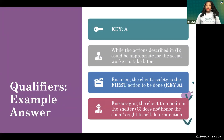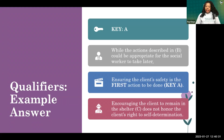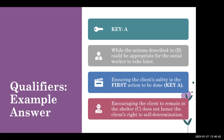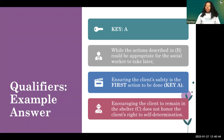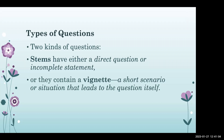Dr. Keys confirms the approach was correct. The volunteer got rid of the distractors and focused on the key, which was A. While the actions in B would have been appropriate at a later stage, ensuring the client's safety was the first action. Encouraging the client to remain in the shelter does not honor the client's self-determination.